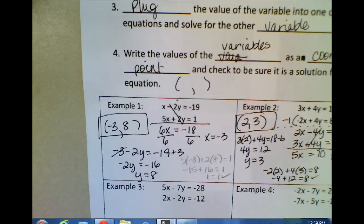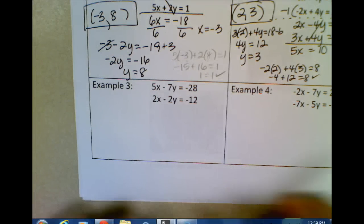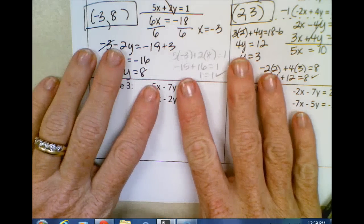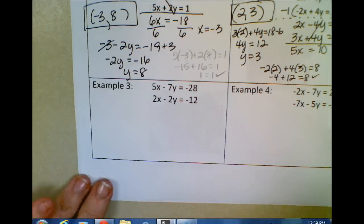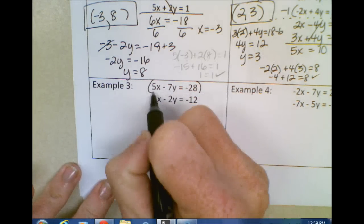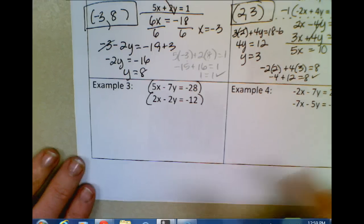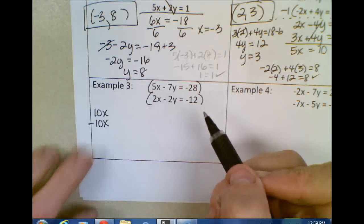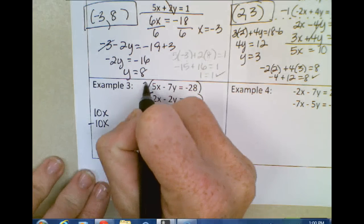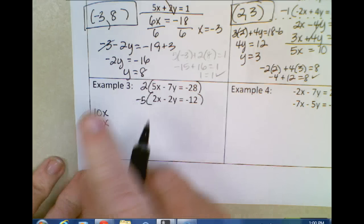Sometimes you have to actually manipulate your equations to get them to cancel out the way you need them to. For example, in number 3 — do my X's cancel out? No. Do my Y's cancel out? No, neither one of them cancel. So you now have to make a decision: which variable do you want to eliminate first? I'm going to eliminate the X's first. My coefficients are 5 and 2, so I want a number they both go into — the easiest way is to multiply them together, giving me 10X, but I need one of those to be negative. So I'll multiply the first equation by 2 and the second equation by negative 5.